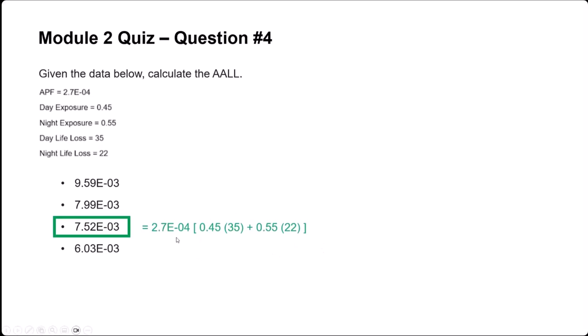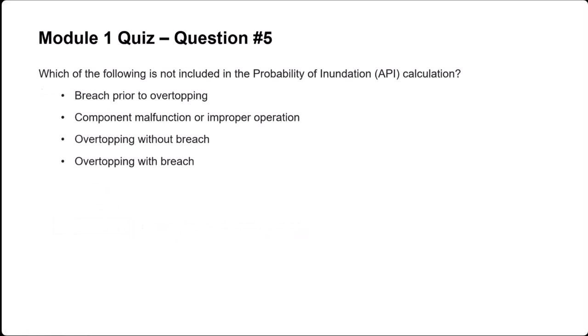The last question: which of the following is not included in the probability of inundation calculation? When we calculate the annual probability of inundation (API), we're looking for the APF of all failure modes prior to overtopping, and we're adding to that the annual exceedance probability for the overtopping stage. The correct answer is overtopping with breach — we're not including the probability of failure by overtopping, only the annual exceedance probability for overtopping.